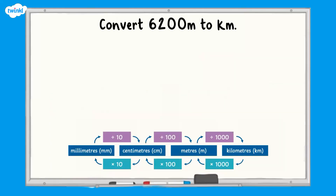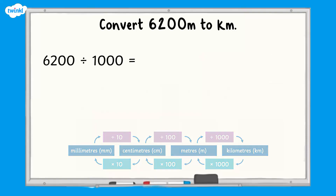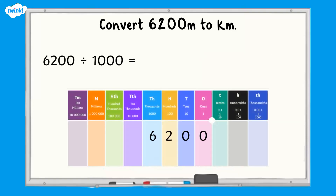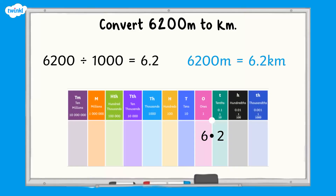If asked to convert 6200 metres to kilometres, divide by 1000 to give an answer of 6.2 kilometres. Remember, when we divide by 1000 we move our digits three place value columns to the right.